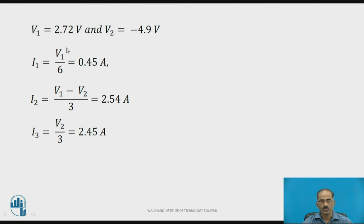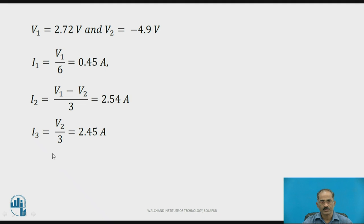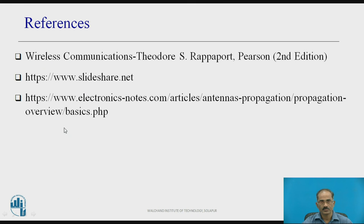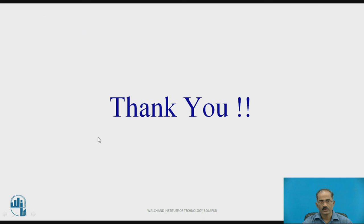Using these two equations, V1 equals 2.72 V and V2 equals minus 4.9 V. Substituting back: I1 equals V1 by 6, which equals 0.45 A; I2 equals (V1 minus V2) by 3, which equals 2.54 A; I3 equals V2 by 2, which equals 2.45 A. These are the references used to prepare this presentation. Thank you.